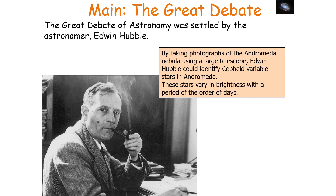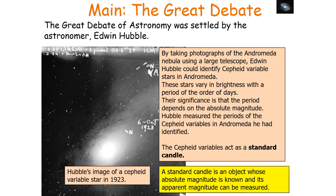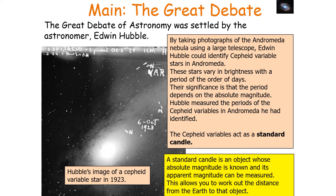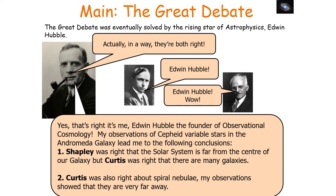This great debate was settled by the astronomer Edwin Hubble. By taking photographs of the Andromeda nebulae using a large telescope, Hubble identified separate variable stars in Andromeda — stars that vary in brightness with a period of a few days. He used these Cepheid variables as standard candles, objects whose absolute magnitude is known and whose apparent magnitude can be measured, allowing you to calculate the distance from Earth. Hubble found Andromeda is about 900 kiloparsecs away, far beyond the Milky Way, which was known to be about 50 kiloparsecs in diameter. Shapely was right that the solar system is far from the centre, but Curtis was right that there are many different galaxies.